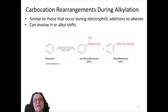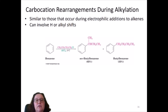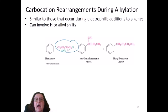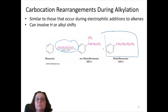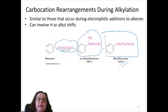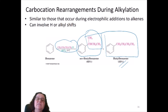Another problem is that carbocation rearrangements occur during alkylation. For example, this reaction looks straightforward: benzene reacting with chlorobutane. Interestingly, what you primarily make is not butyl benzene — you only get 35% of that — but mainly sec-butyl benzene with a rearranged carbocation. That is because once you form the carbocation, it sometimes evolves to give the most stable carbocation, and that is the one that reacts with the benzene ring.